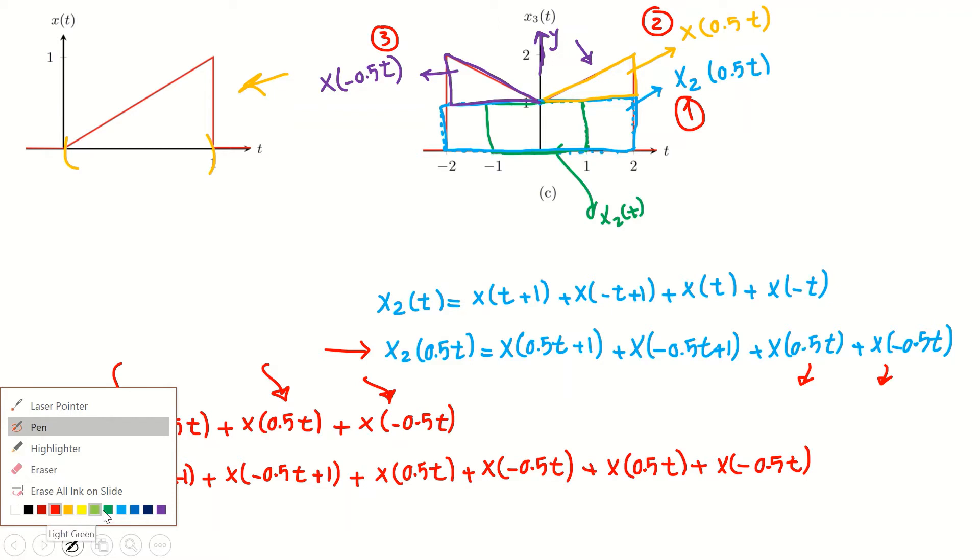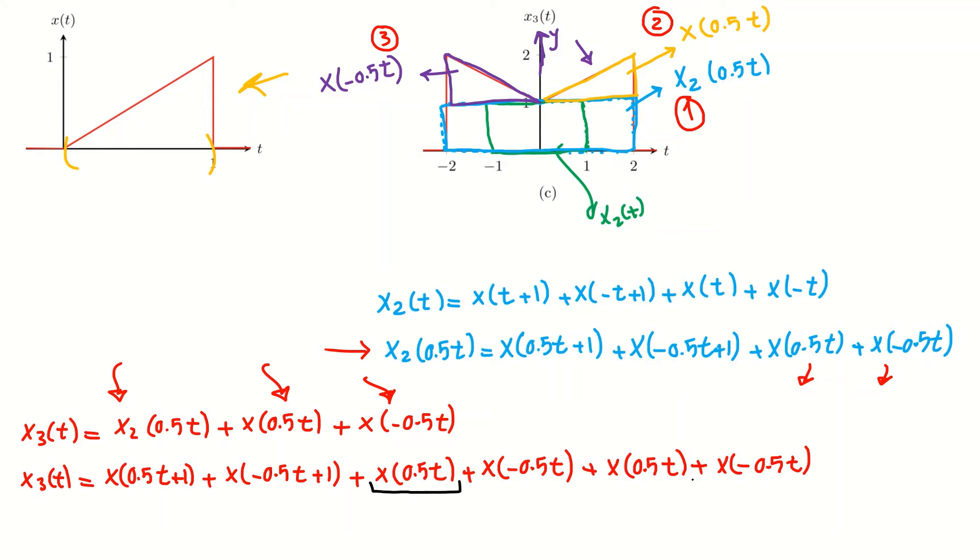And then we have these two items here: X of 0.5t plus X of minus 0.5t. Okay, so if you check, you see that this tool—let me use different color, what color should we use, use black here—okay, you see this part and this part exactly are the same, and also this one and this one. So I can add them up, and I can write X3 like this: X3(t) equals X of 0.5t plus 1, plus 2 times X of 0.5t, plus 2 times X of minus 0.5t. And this is X3(t) based on X(t) only.